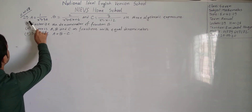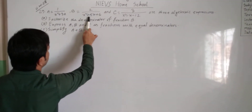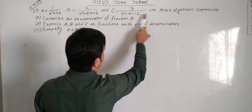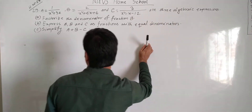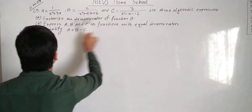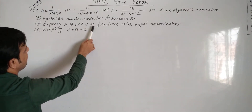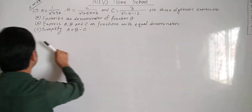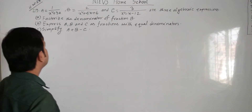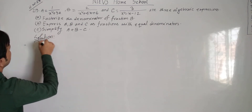Question 29: a equals 1 divided by (x² + 3x), b equals 2 divided by (x² + 5x + 6), and c equals 3 divided by (x² - x - 12). These are three algebraic expressions. Part (a): factorize the denominator of fraction b. Part (b): express a, b, and c as fractions with equal denominators. Part (c): simplify a plus b minus c.